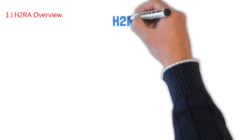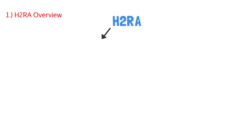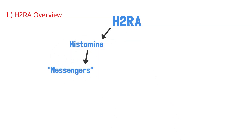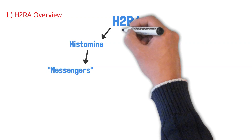To first understand this class of drugs, let's do a quick overview. The H in H2RA stands for histamine. Histamine is a type of messenger — it causes something to happen, it messages something to occur. We'll leave it at that for now.